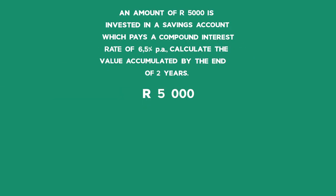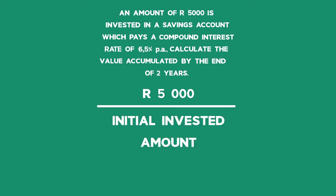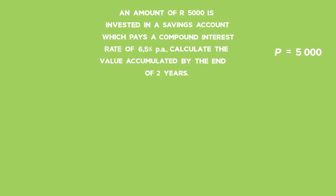If 5,000 Rand is invested, we write down that our initial invested amount is 5,000. This account pays a compound interest rate of 6.5% per annum. My interest rate in decimal form is 6.5 divided by 100 to get the decimal equivalent, which gives me 0.065.